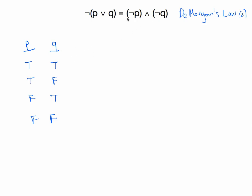Let's work with the left-hand side. I'll use a purple color for that one. Building this truth table up from the very basics, we're going to need a column for the disjunction in the middle — that's P or Q. This is a disjunction, so we're going to have a true statement unless P and Q are both false. If either one or both of those individual statements is true, then the disjunction is true. So this is going to be true, true, true, false.